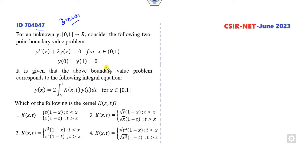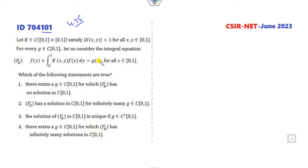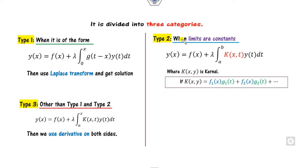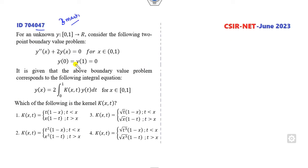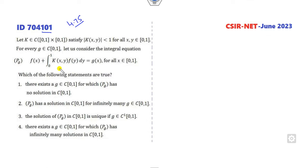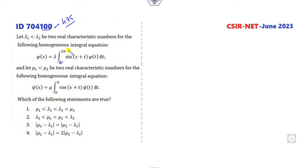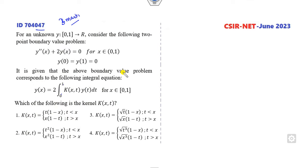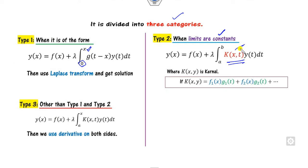If you look closely at all these integral equation questions, as I mentioned in previous lectures, there are basically three categories. The first category is when the limits are from 0 to a variable. The second category is when the limits are from a constant to a variable. The third category is when the limits are constants. All three of today's questions fall into this third category where limits are constants.